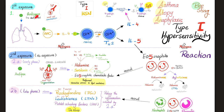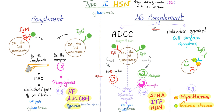Let's review type 1: first exposure and second exposure. The second exposure is subdivided into early phase and late phase. Examples include asthma, atopy, anaphylaxis, bee sting. Type 2 is cytotoxic — we have the complement story and the no-complement story. The complement story could involve IgM or IgG, with examples such as rheumatic fever, anti-glomerular basement membrane antibody disease (Goodpasture syndrome), and hyperacute organ transplant rejection. The no-complement pathway includes antibody-dependent cell-mediated cytotoxicity — examples: autoimmune hemolytic anemia, autoimmune thrombocytopenia, hemolytic disease of the newborn. Or it could be antibodies against cell surface receptors: inhibiting the receptor, as in myasthenia gravis, or stimulating the target, as in Graves' disease.